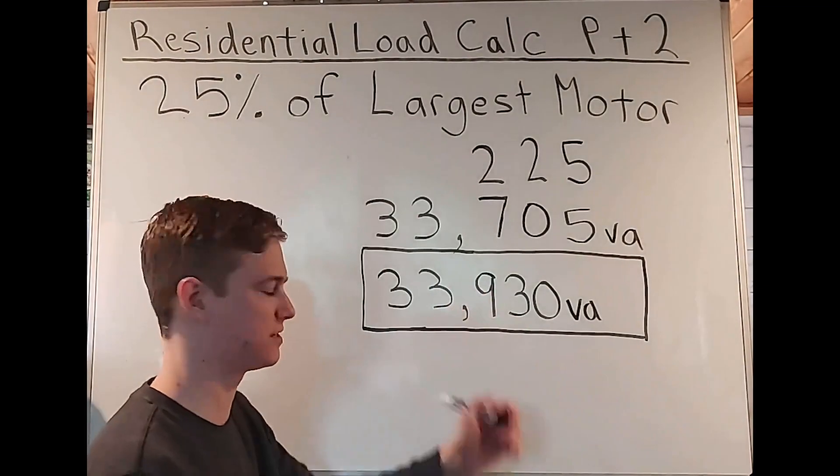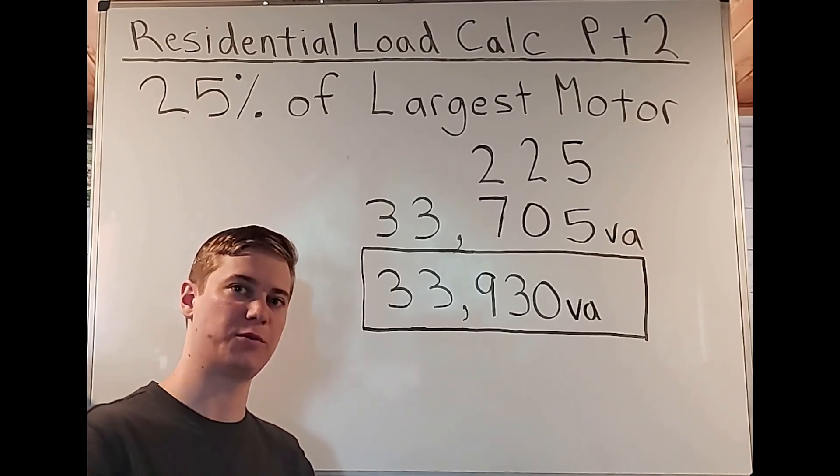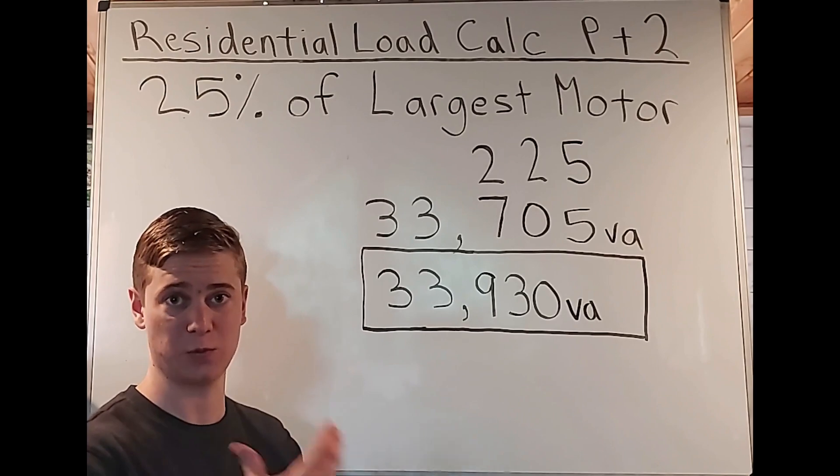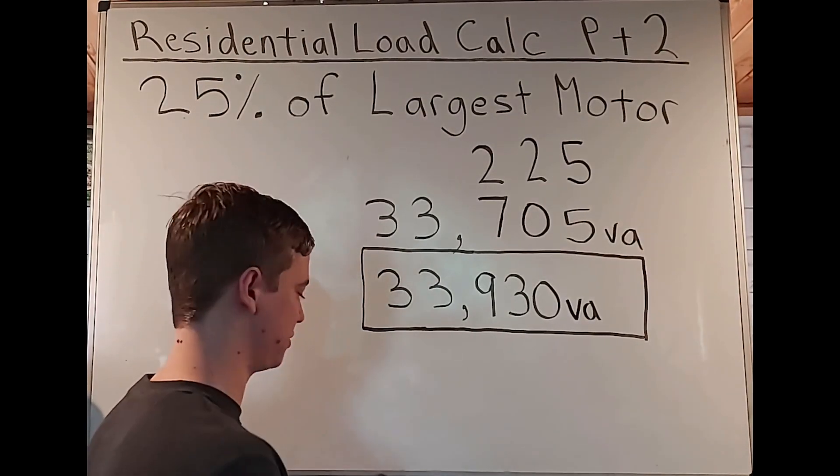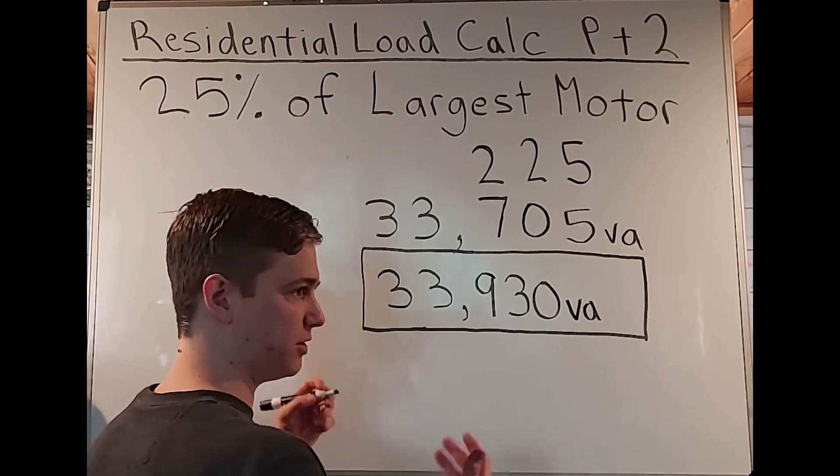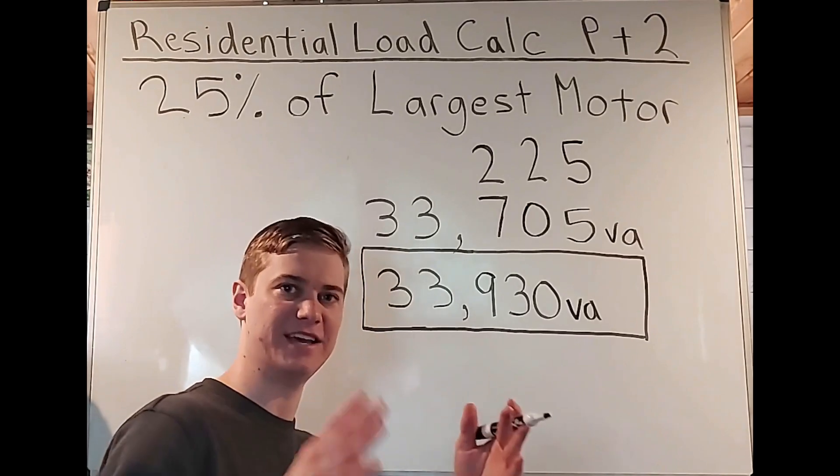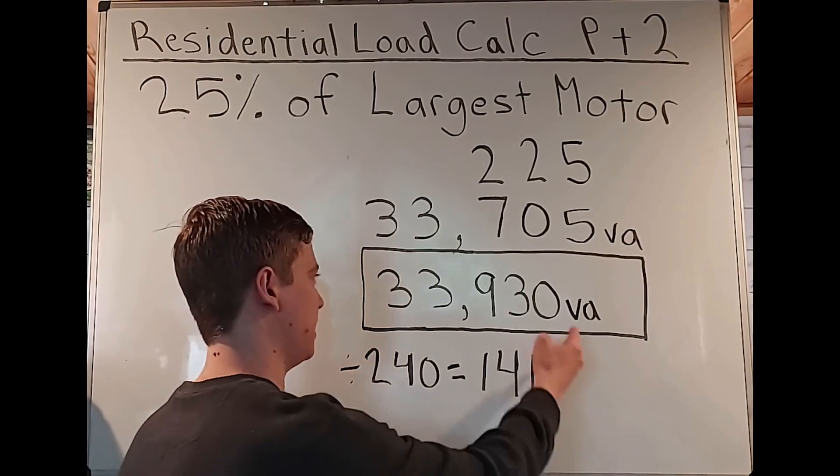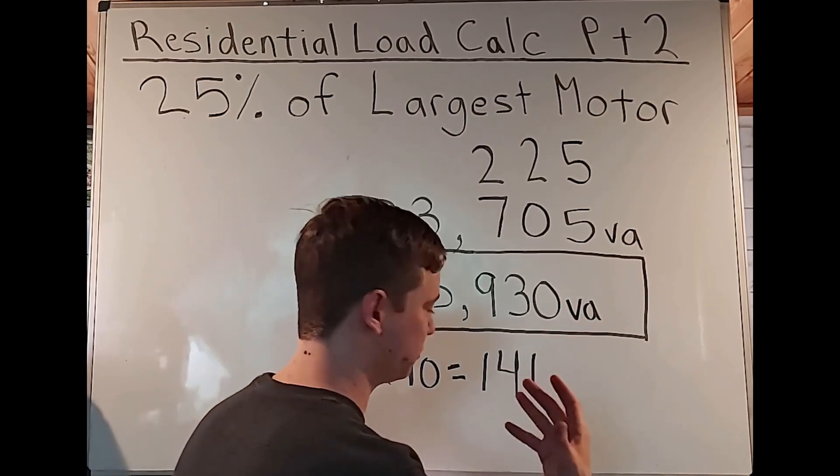Now that we know our total demanded load for that unit, what size overcurrent protection device can we use for this? And what size wires can we use with that? So to do that, we're going to get our number 33,930, and we're going to divide it by 240. Since for residential, if you look at the panel, we have an A phase and a B phase. And we come up with 141. And remember we had volt amps. We're dividing the volts. So we're left with amps.